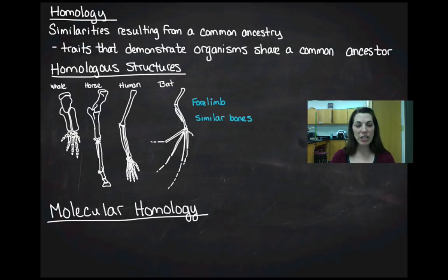The second type of homology is molecular homology, and that's a little different. The things that are similar in the forelimb are the number of bones and the arrangement of the bones.